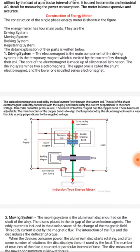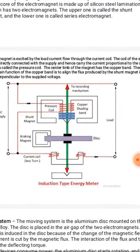There are four main systems: driving system, moving system, braking system, and register system in the induction type energy meter. Last time I drew this diagram on the board and explained each and every part with its errors and remedies.